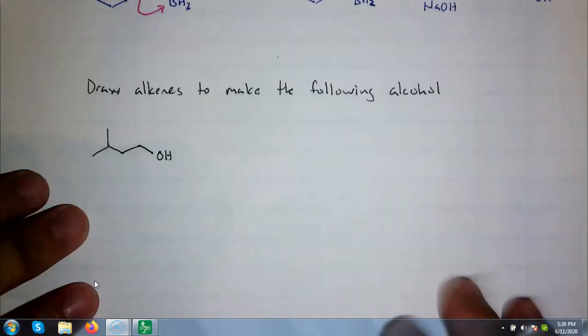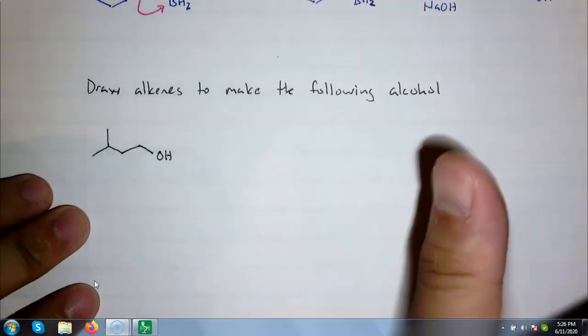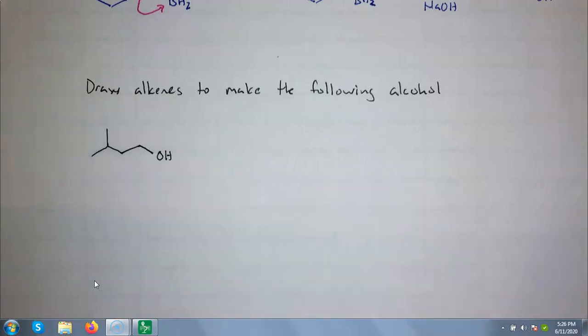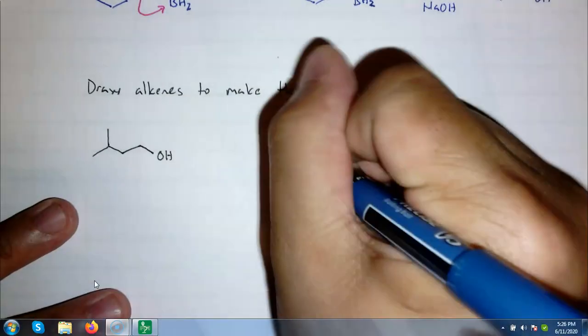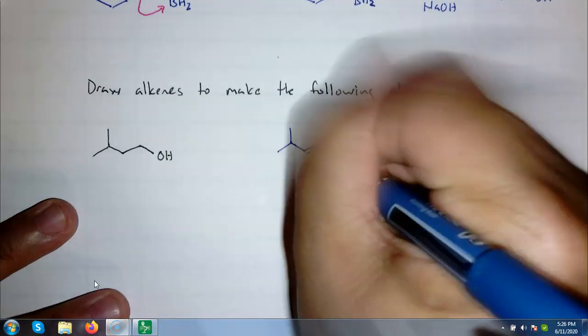If you study this well enough, I could ask a question like this. Draw alkenes to make the following alcohols. Because now we have two ways to make alcohols. We can make them Markovnikov or non-Markovnikov. If I ask you something like this, then most likely I'm not worried about stereochemistry.